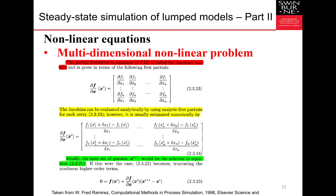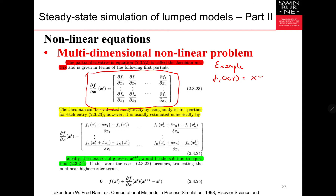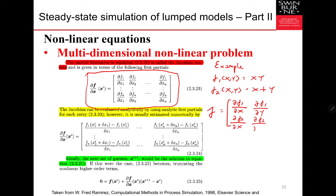We can construct the Jacobian matrix as shown in these equations. For example, let's say you have F1(X,Y) = XY and F2(X,Y) = X + Y. Then your Jacobian will be: del F1 per del X, del F1 per del Y, del F2 per del X, del F2 per del Y.